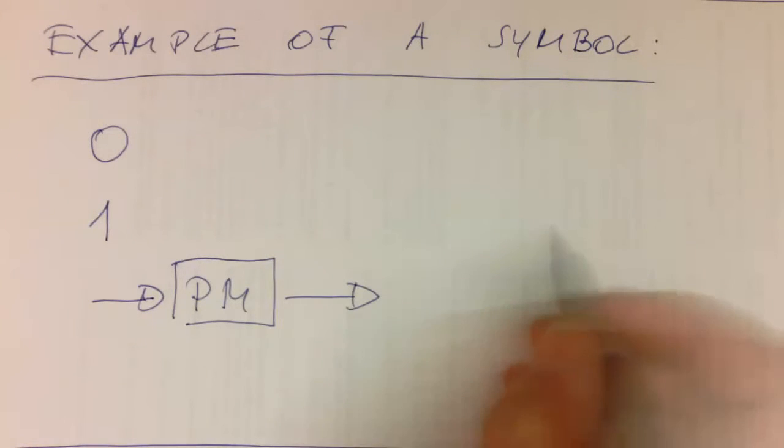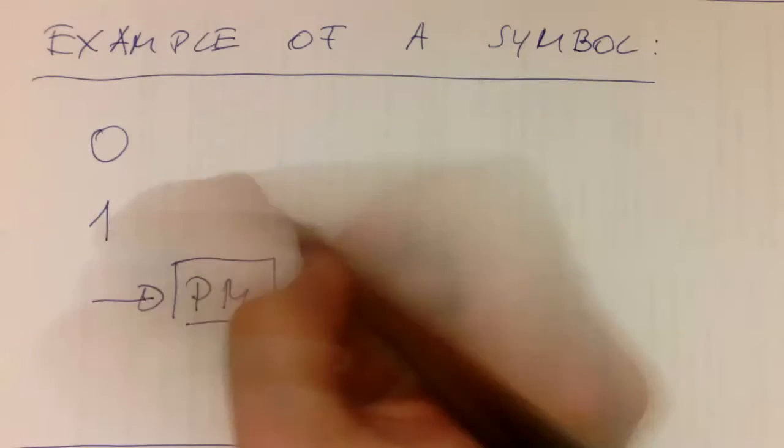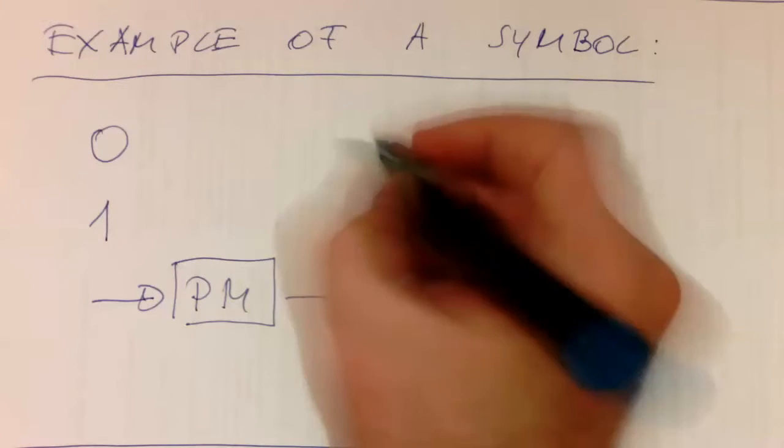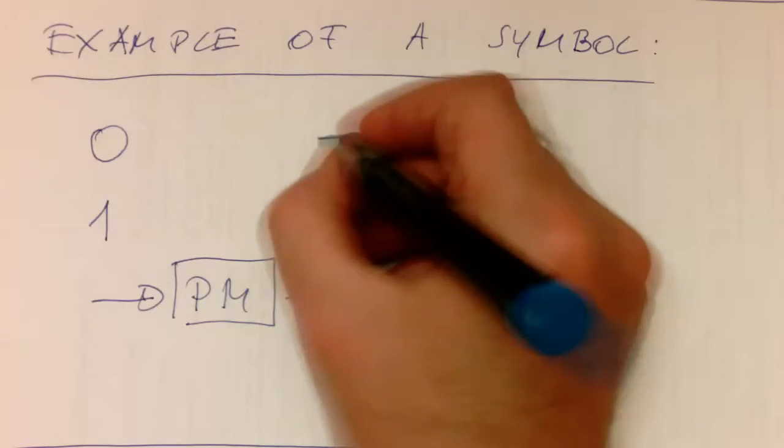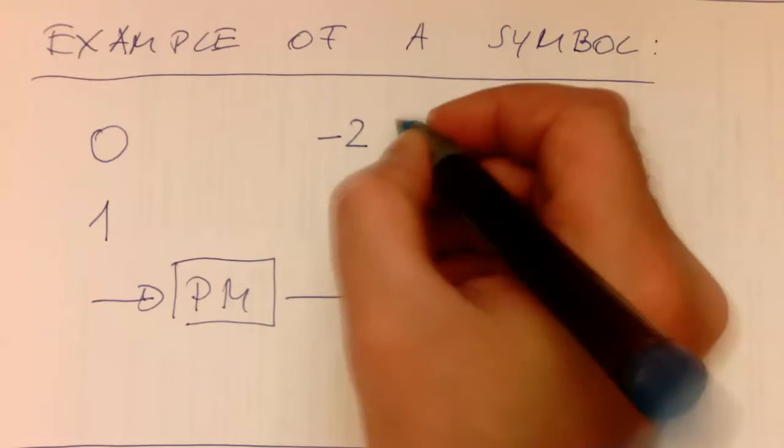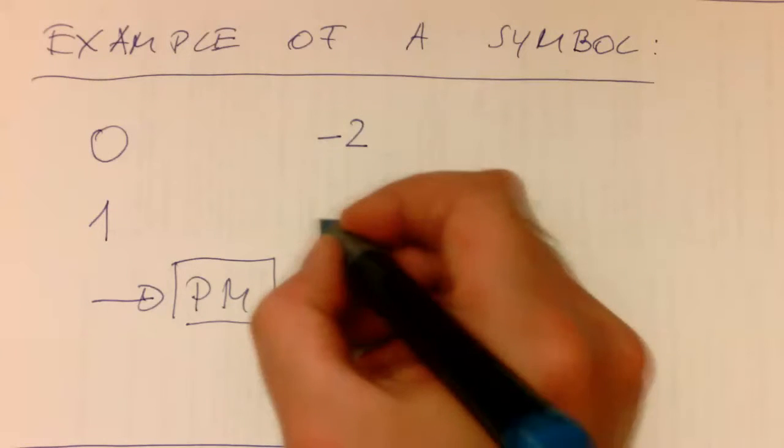This turns the zero and the one into certain values. So let's say the zero turns into minus two, and the one turns into plus two.